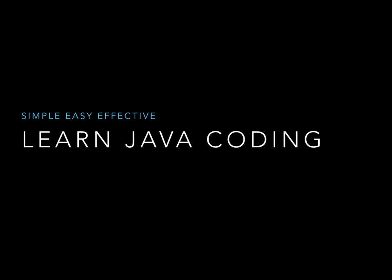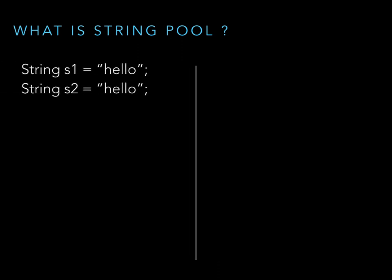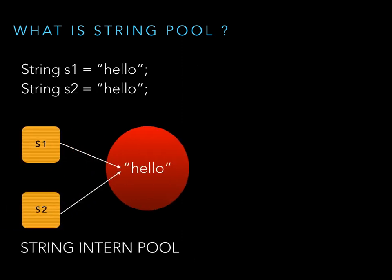Before we discuss why Java strings are immutable, we first need to learn the concept of string pool in Java. Consider two strings: s1 and s2, both assigned the same literal value 'hello'. When a user tries to create s1 and s2 with the same string literal, both strings are created in the Java string pool — represented here by the red oval shape.